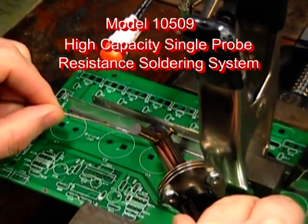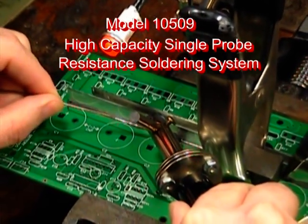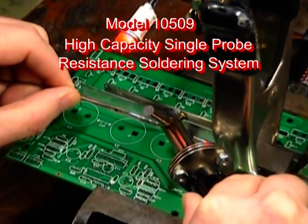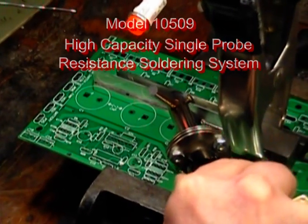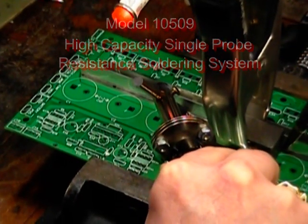This application is being performed using American Beauty resistance soldering equipment in order to overcome the severe heat sinking properties that are often encountered when soldering bus bars or large heat sinks to printed circuit boards.